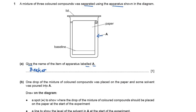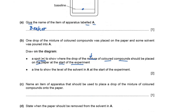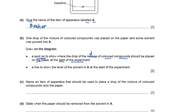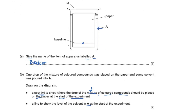One drop of the mixture of colored compounds was placed on the paper and some solvent was poured in. On the diagram, draw a spot to show where the drop of the mixture should be placed on the paper at the start. The mixture of colored compounds has to be placed on the baseline, which is already labeled — draw a dot on the baseline. For the solvent level, the solvent has to be below the baseline.